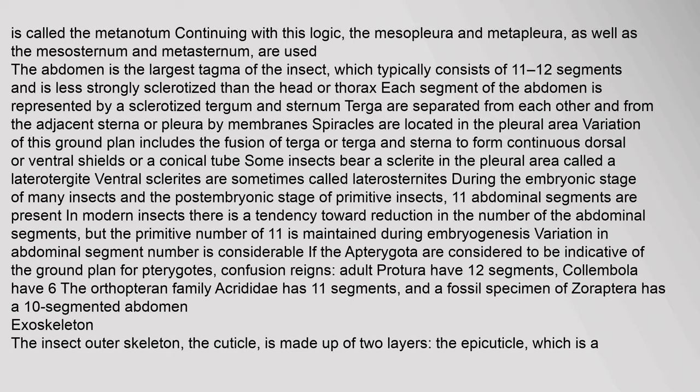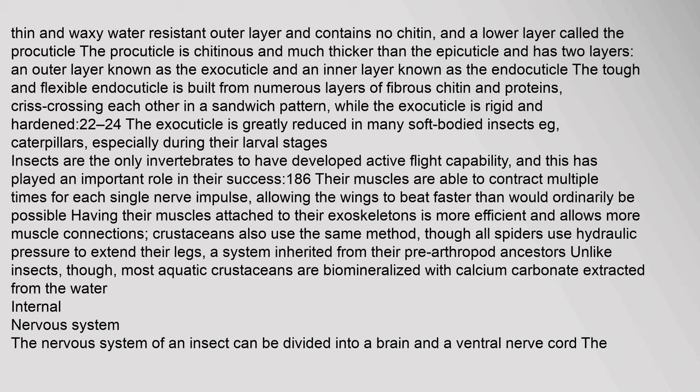The insect outer skeleton, the cuticle, is made up of two layers: the epicuticle, which is a thin and waxy water-resistant outer layer containing no chitin, and a lower layer called the procuticle. The procuticle is chitinous and much thicker than the epicuticle, and has two layers: an outer exocuticle and an inner endocuticle. The tough and flexible endocuticle is built from numerous layers of fibrous chitin and proteins criss-crossing in a sandwich pattern, while the exocuticle is rigid and hardened. The exocuticle is greatly reduced in many soft-bodied insects such as caterpillars, especially during their larval stages.